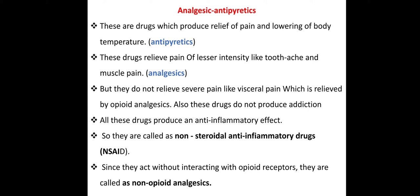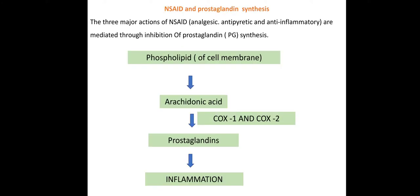If we consider the antipyretic and analgesic activity, we will discuss prostaglandins. Our cell membrane is made up of phospholipids. From phospholipids, arachidonic acid is formed. Prostaglandins are made from arachidonic acid with the help of COX-1 and COX-2, that is cyclooxygenase-1 and cyclooxygenase-2.